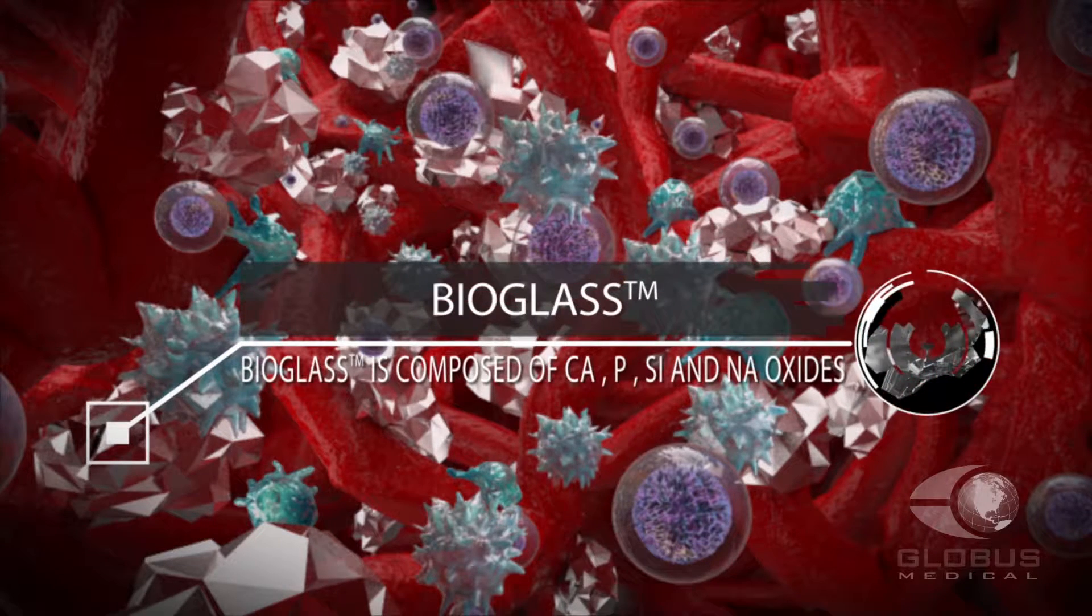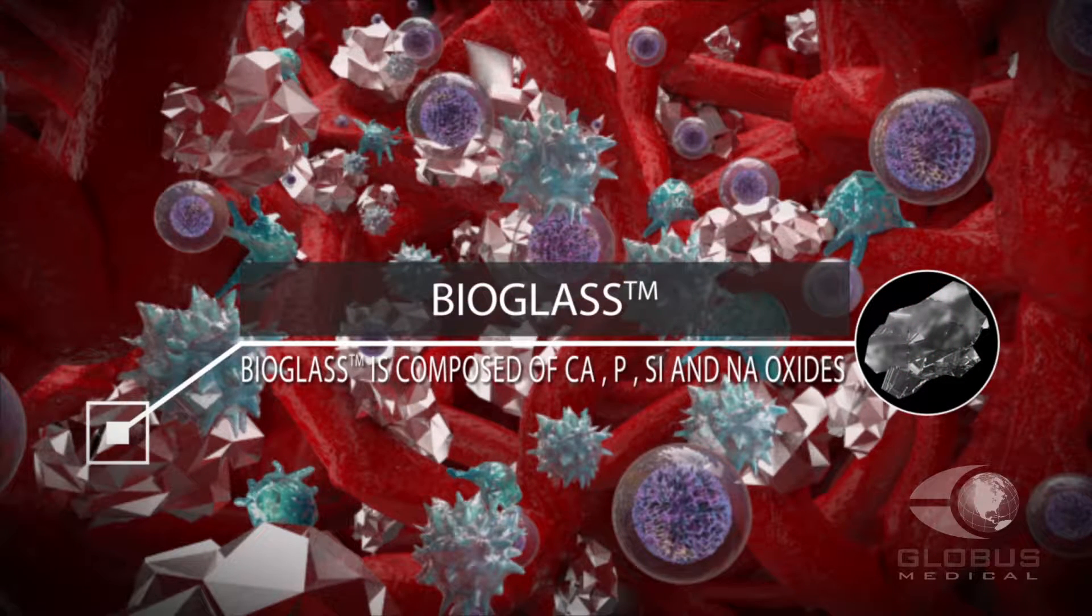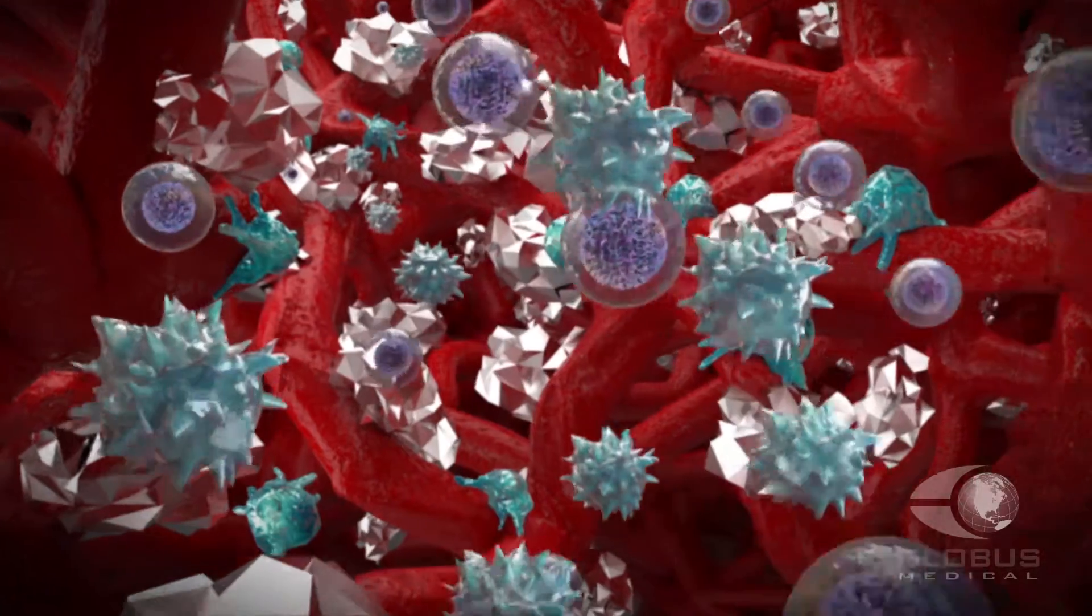Bioglass is composed of calcium, phosphorus, silicon, and sodium oxides, which are minerals that naturally occur in the body.